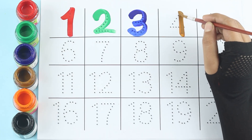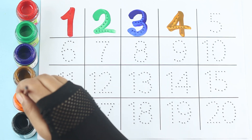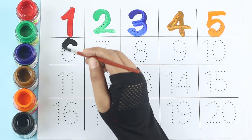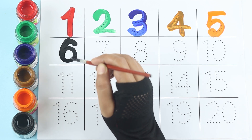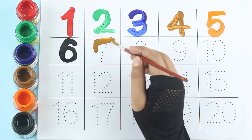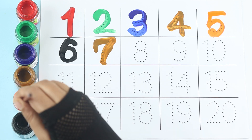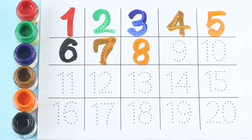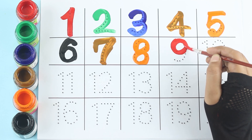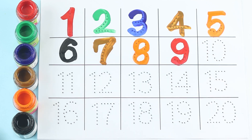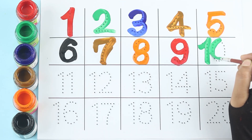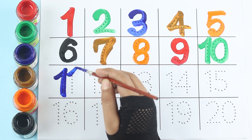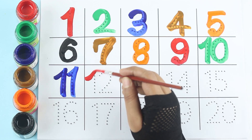Brown color four, orange color five, black color six, brown color seven, orange color eight. Red color nine, green color ten, blue color eleven, green color twelve.